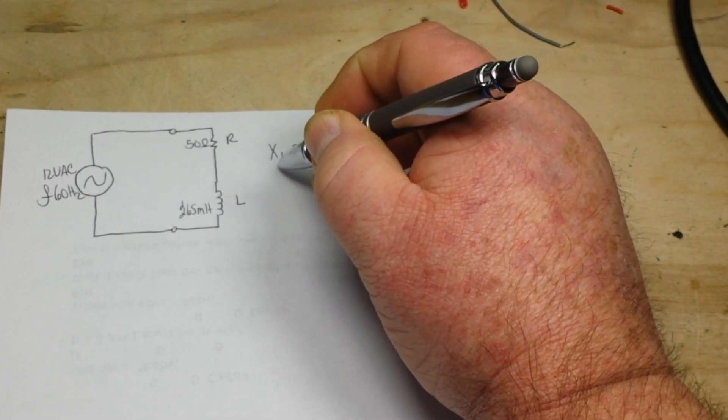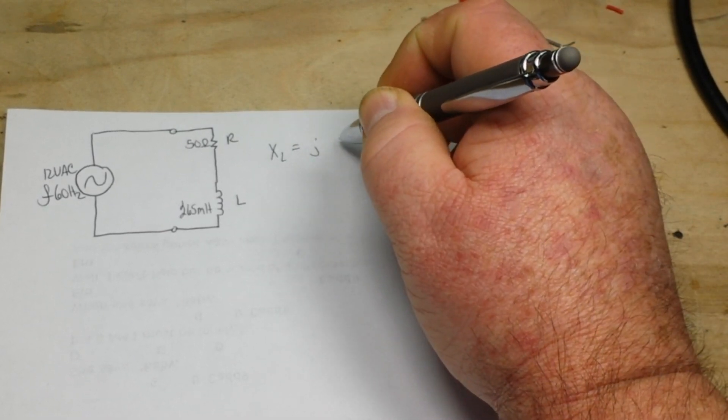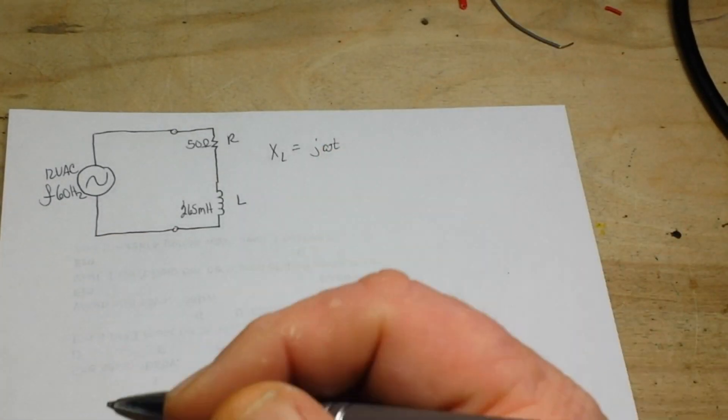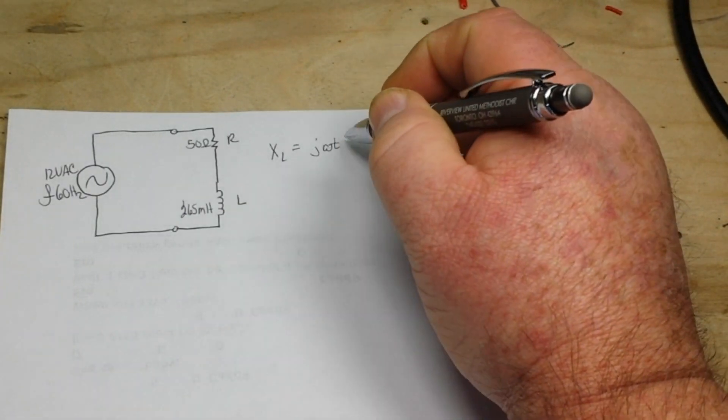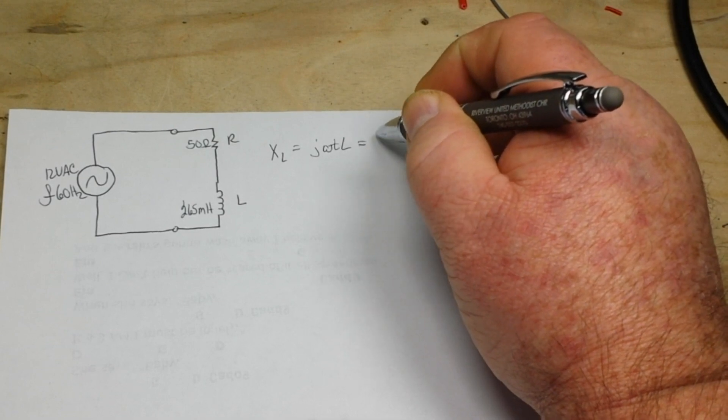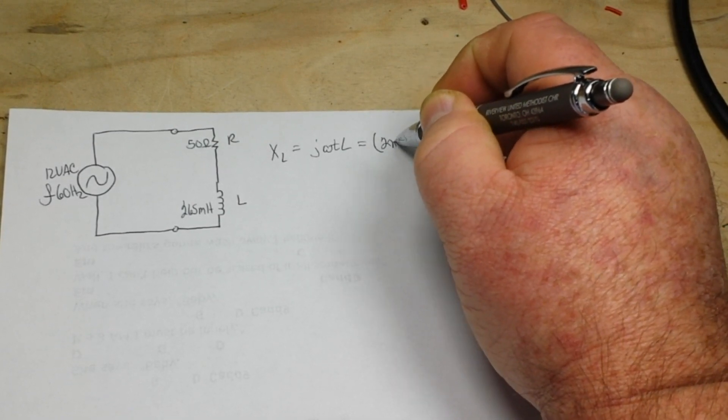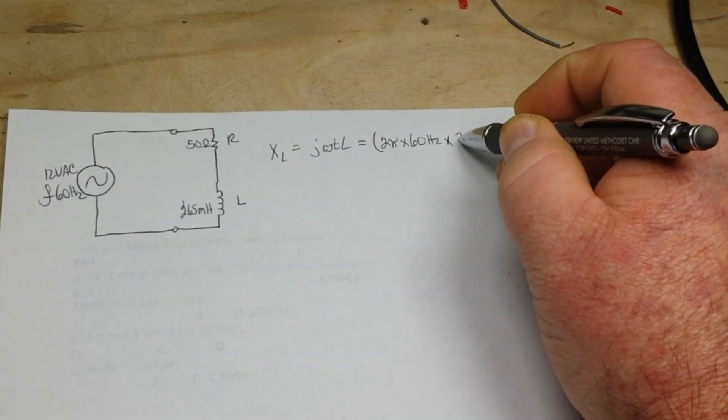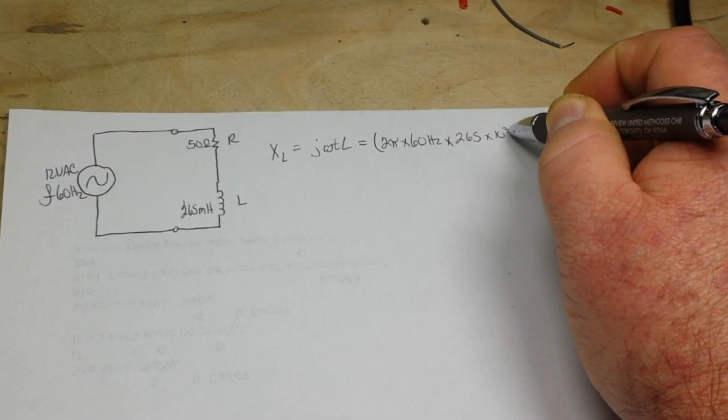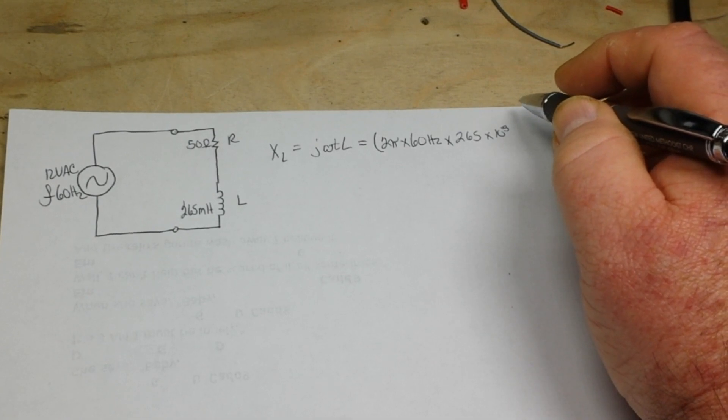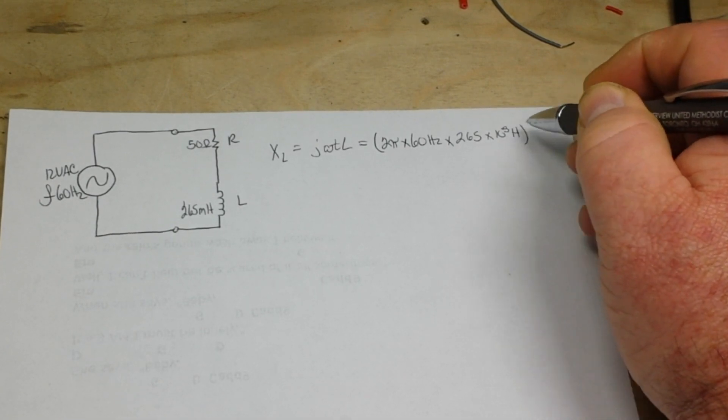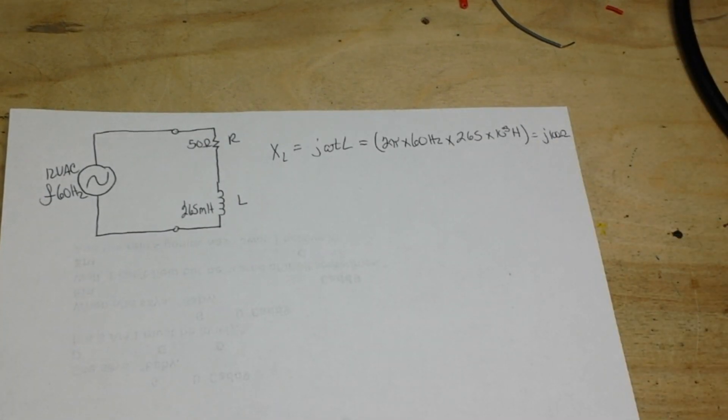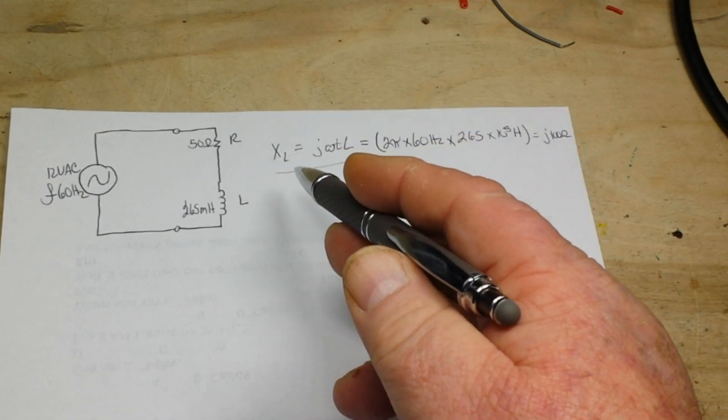The formula for the reactance of the inductor—that's inductive reactance—is the imaginary number j times omega times L. That equals, in this case, 2π times 60 Hertz times 265 times 10 to the minus 3 Henrys, and that gives us the imaginary number j of 100 ohms.